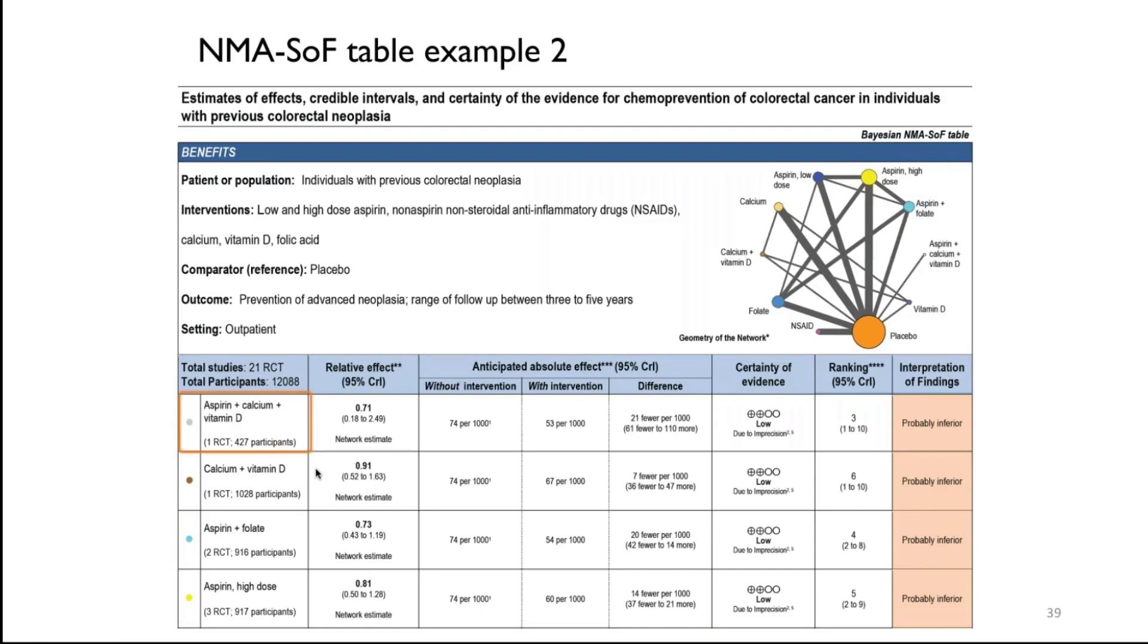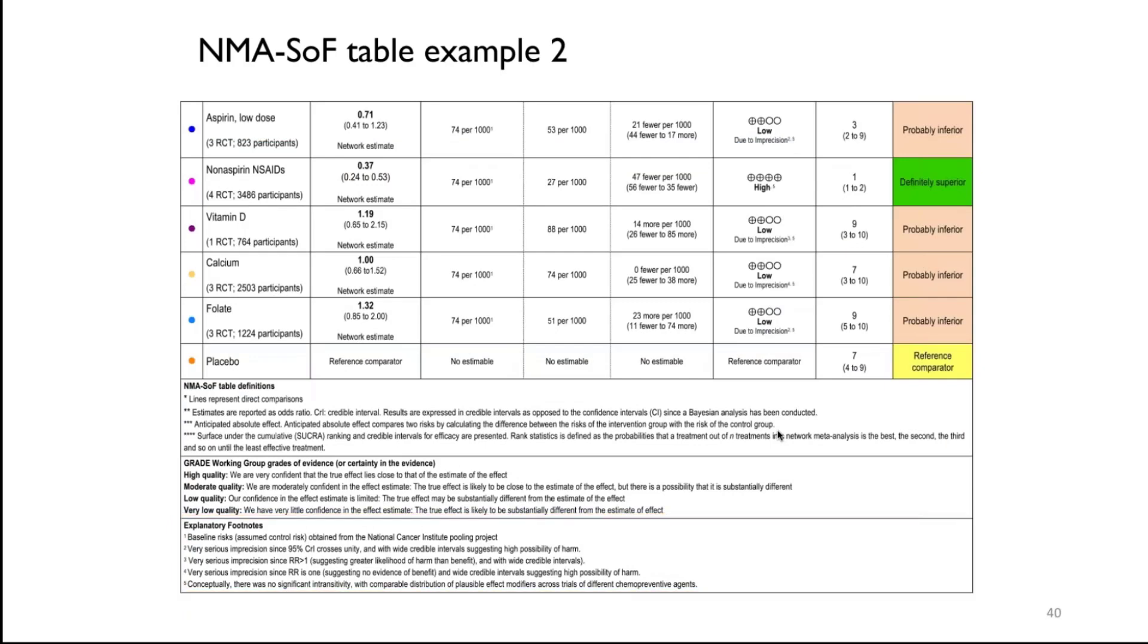The information is presented for each of the interventions. There was one randomized control trial that actually compared aspirin, calcium, and vitamin D against placebo as a reference intervention or the comparator. What happened here is that the network estimate provided even better evidence than the direct comparison. Therefore, that's provided in the summary of findings tables with the absolute estimates. Meaning that with the intervention, there would be probably 21 fewer per 1,000, but there were serious imprecision, and this estimate was rated down, indicated by the fairly wide confidence intervals. Certainty of the evidence and the ranking based on the SUCRA analysis. That was just the second example.